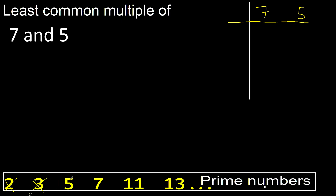5. Can be divided by 5? Yes, 5 divided by 5 is 1. 7 cannot be divided by 5, therefore equal.